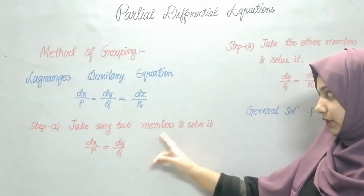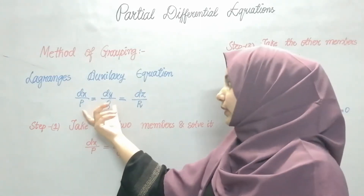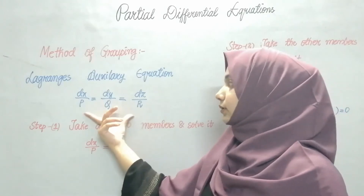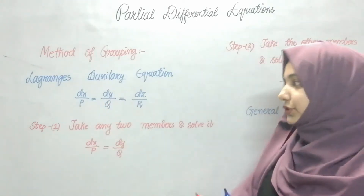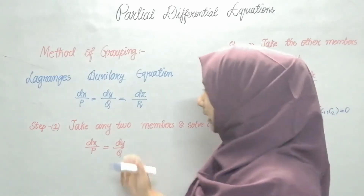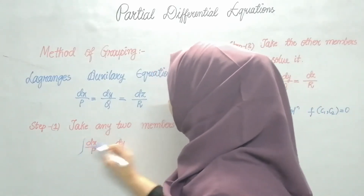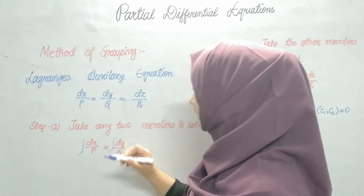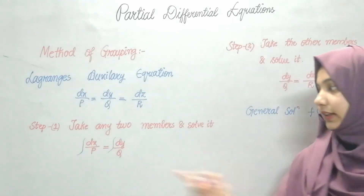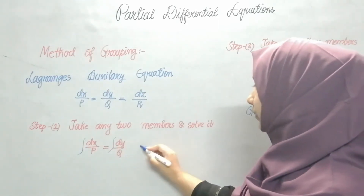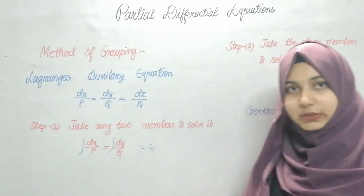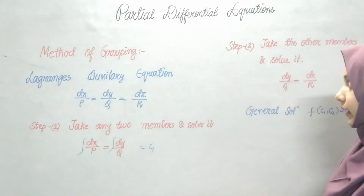You can take any two members — dx/P and dy/Q, or dy/Q and dz/R, or dx/P and dz/R — your choice. You are going to integrate whichever two you pick. For example, I took dx/P and dy/Q, I am going to integrate it, and this will give a constant C1.